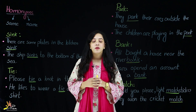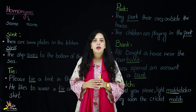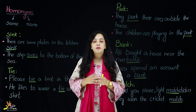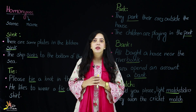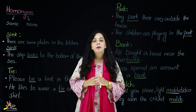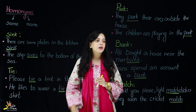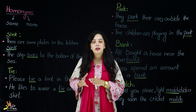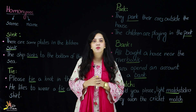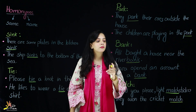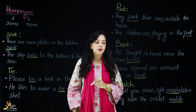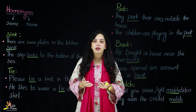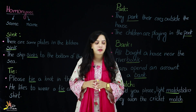Next homonym is 'bank'. Bank has two meanings. One is the very familiar bank where we keep our money so it stays safe and secure. The other meaning of bank is the edge or shore of something. Example: 'Ali bought a house near the river bank' — Ali bought a house near the edge of the river, so here the word used is 'river bank'. Next example: 'Sarah opened an account in a bank' — it is very obvious here that she opened an account, so this is the bank where we keep our money.